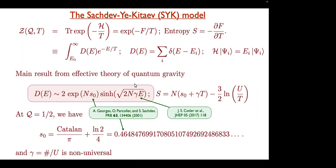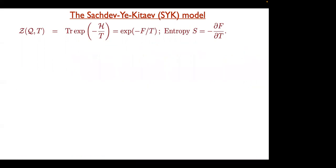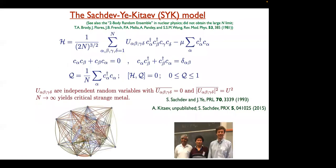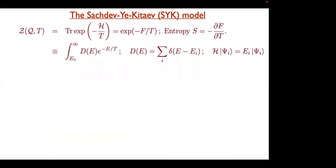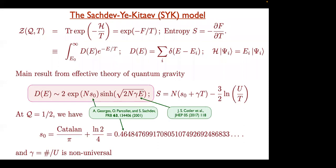Here's a very precisely well-defined Hamiltonian — it's an ensemble of Hamiltonians, but they're all pretty much the same. This is what the density of states looks like, and there's just an enormous amount of information hiding in the structure of this density of states.